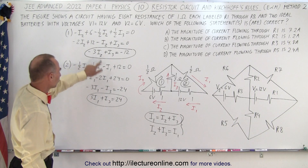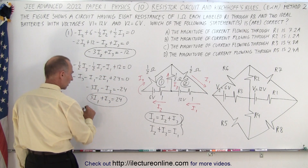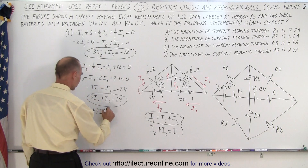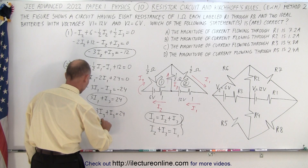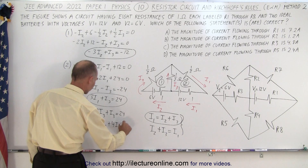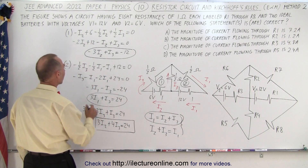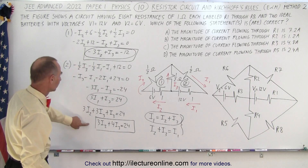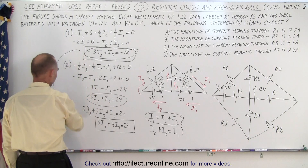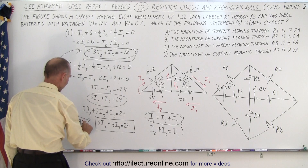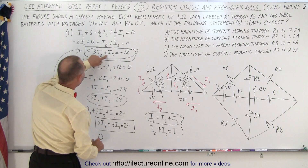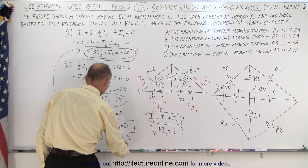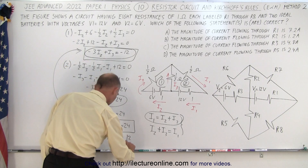To eliminate I1, substitute I1 = I2 + I3 into 3I1 + I3 = 24, giving 3I2 + 4I3 = 24. Adding this to minus 3I2 + I3 = minus 12 eliminates I2, leaving 5I3 = 12, so I3 = 12/5 = 2.4 amps.